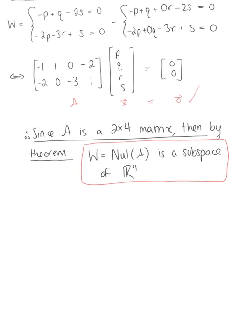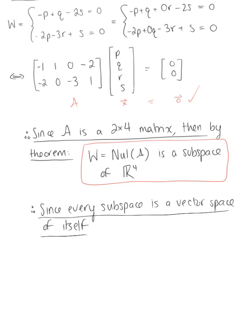And so from here we can make our big finale conclusion: therefore, since we know that every subspace is a vector space of itself, and since we know that W is a subspace of R^4.